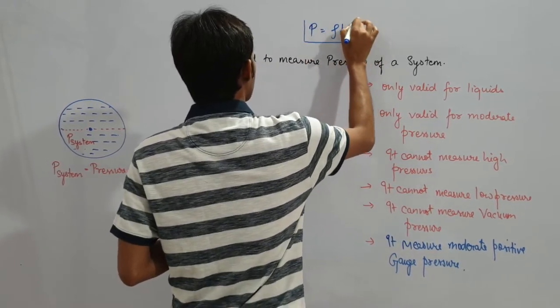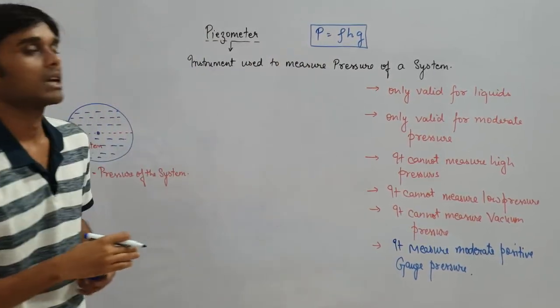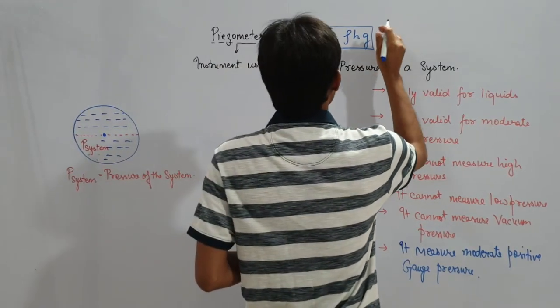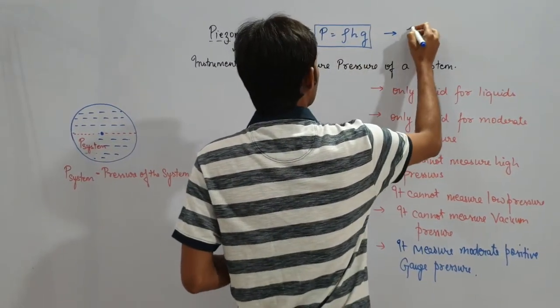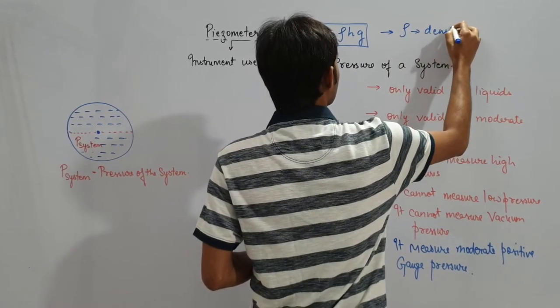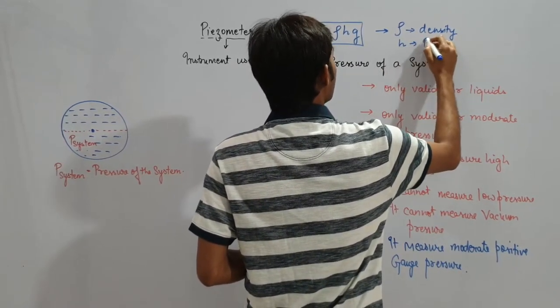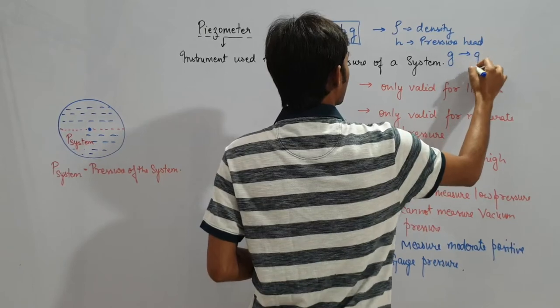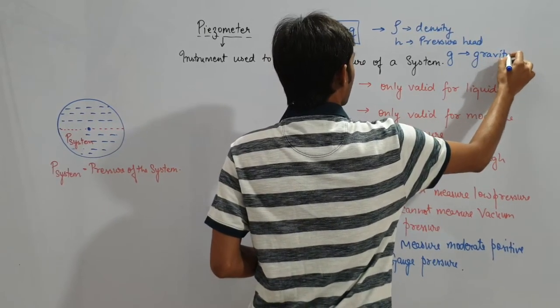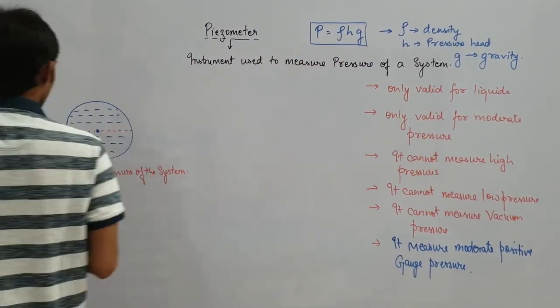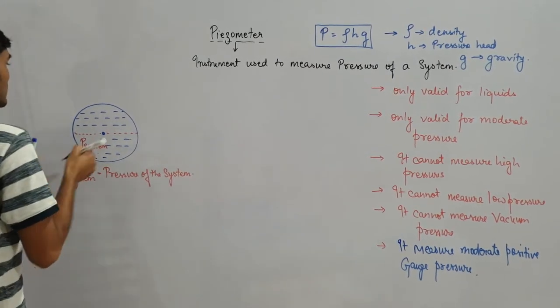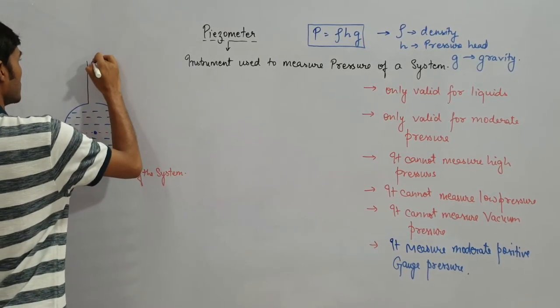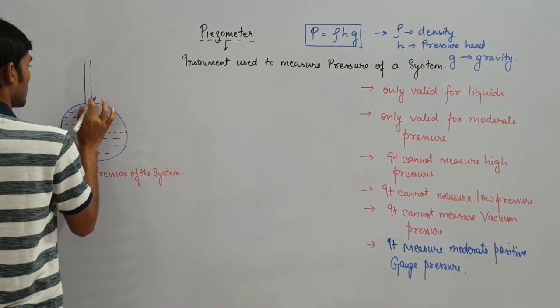The derivation we will not learn now, but this formula we used in the last two, three lectures. We will use here. Density, H pressure head, and G is your gravity. This is a piezometer.